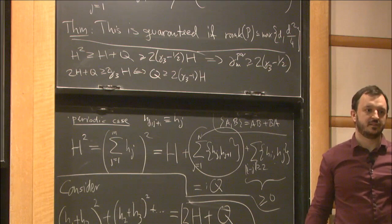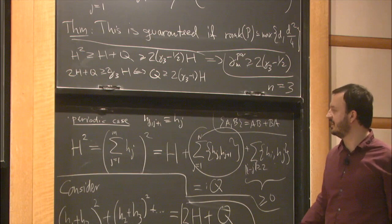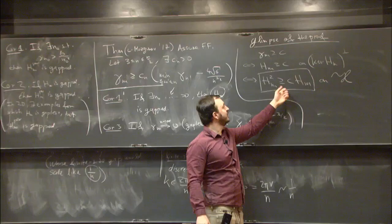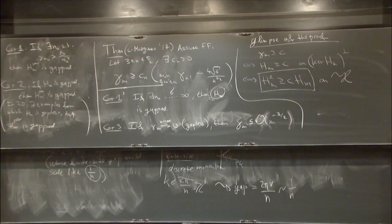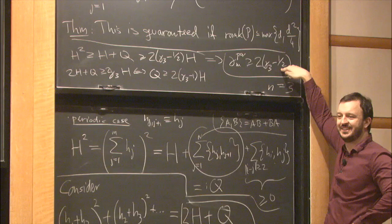Combining: H² ≥ H + Q, and 2H + Q ≥ 2·gamma_3 · H, so Q ≥ (2·gamma_3 - 1)H. Plugging back in: H² ≥ H + (2·gamma_3 - 1)H = 2·gamma_3 · H. This gives periodic gap ≥ 2·gamma_3 - 1/2, which is the finite size criterion for N=3, with threshold 1/(N-1) ~ 1/N. For larger N one can't drop the non-overlapping terms as easily, but the main idea — use equivalence, reduce to subsystem gaps — carries through. That's the Kitayev-inspired idea.